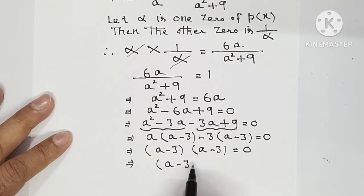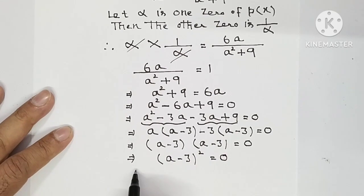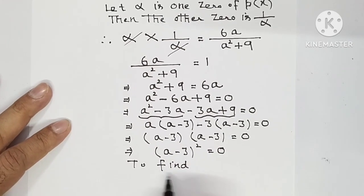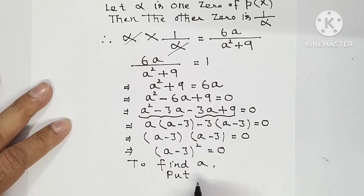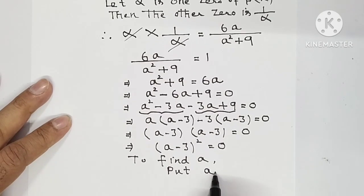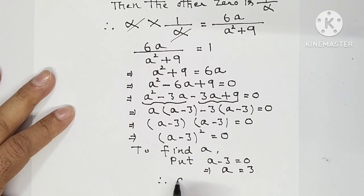To find a, put a minus 3 equal to 0. It implies a is equal to 3. So therefore the value of a has come out to be 3.